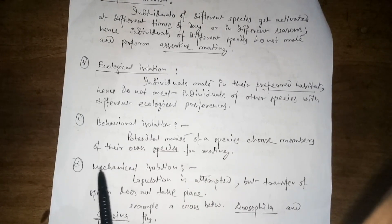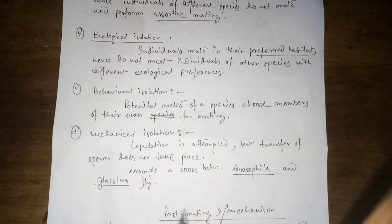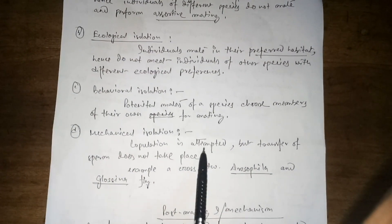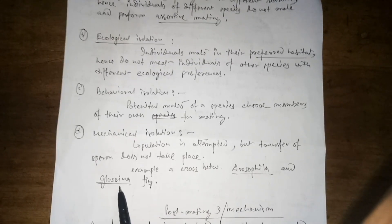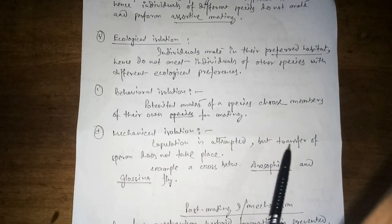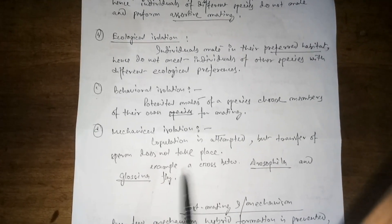Lastly, mechanical isolation: copulation is attempted but the transfer of sperm does not take place. For example, in a cross between Drosophila and Glossina, copulation is attempted but sperm transfer does not occur.